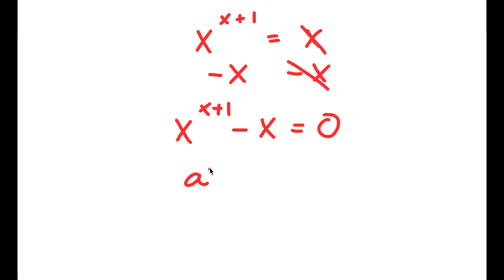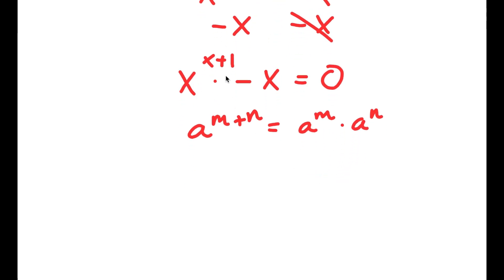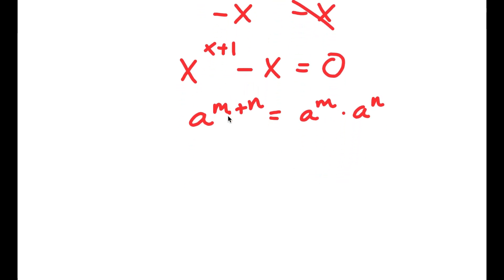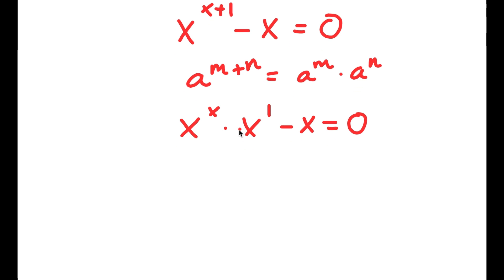If I have something in the form a to the power of m plus n, this is equal to a to the power of m times a to the power of n. So x to the power of x plus 1 is going to equal x to the power of x times x to the power of 1. Now I have this minus x is equal to 0. Factoring out x, I get x times x to the power of x minus 1 is equal to 0.